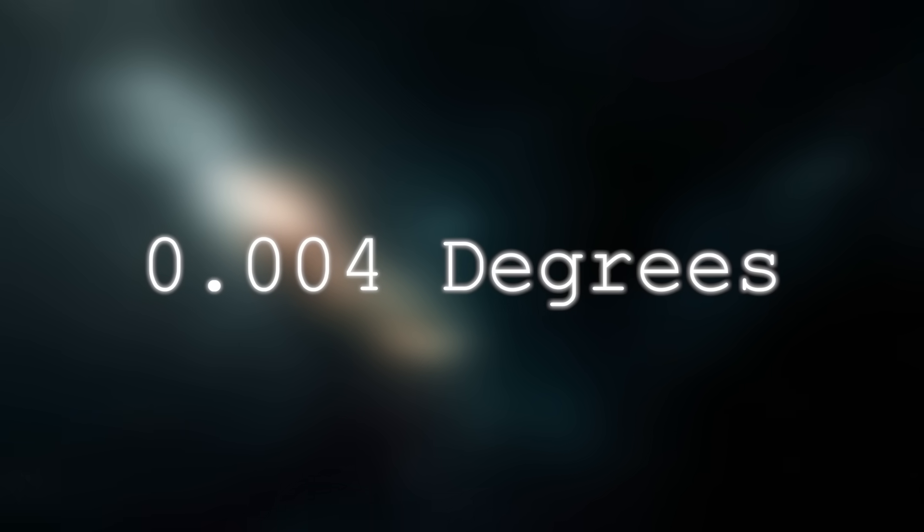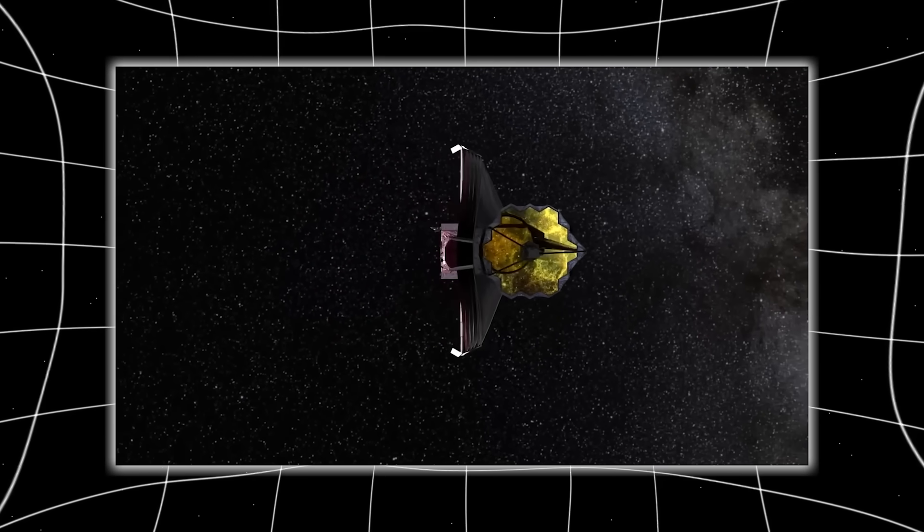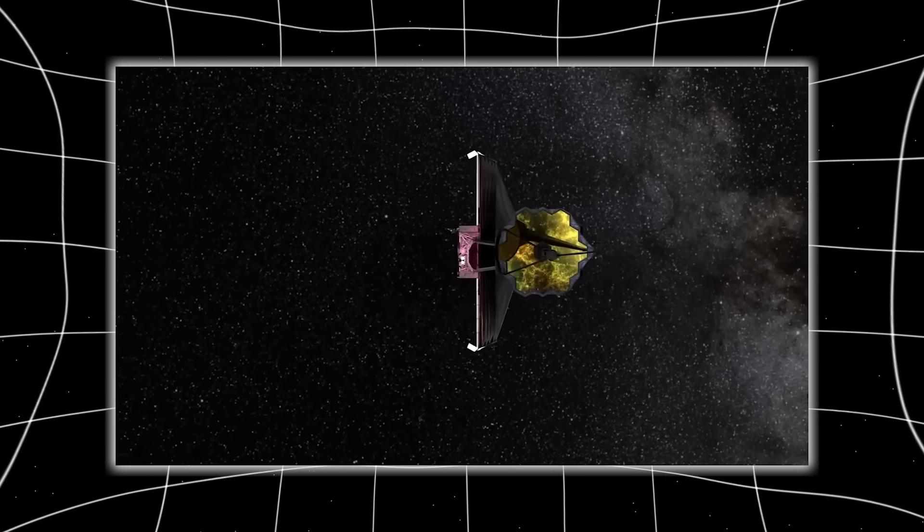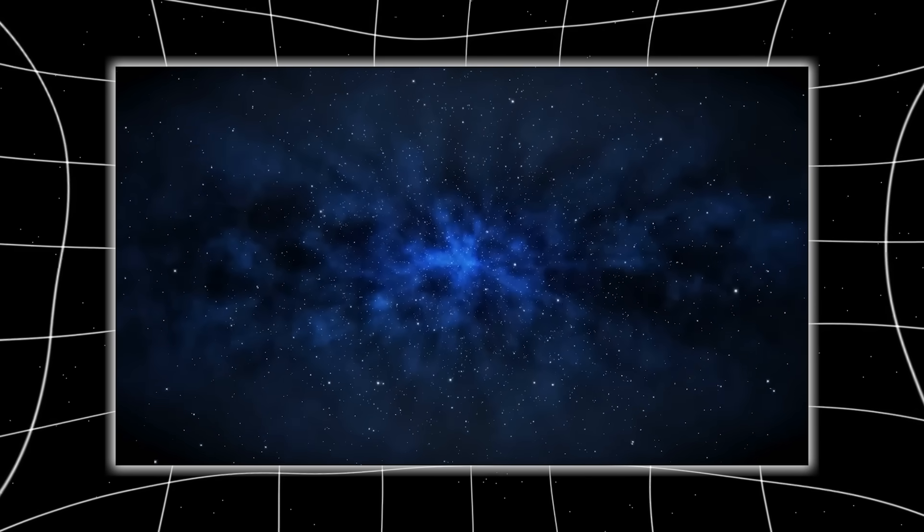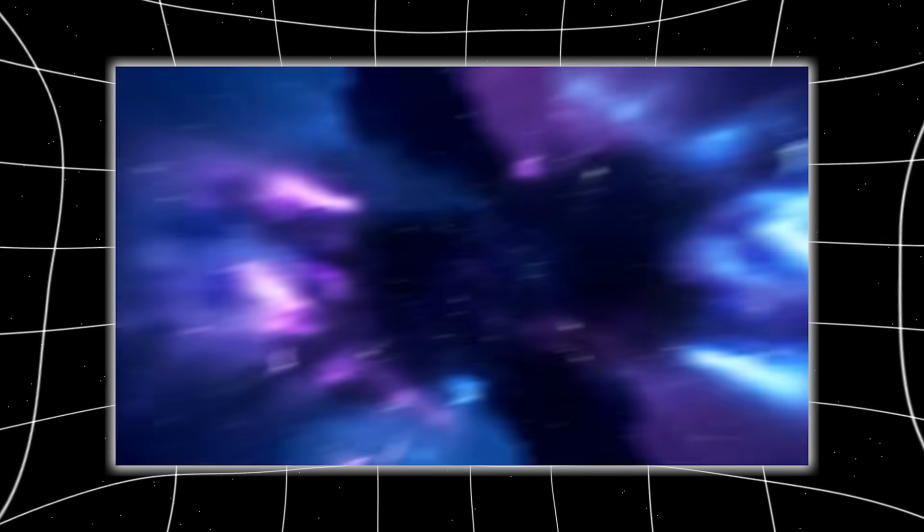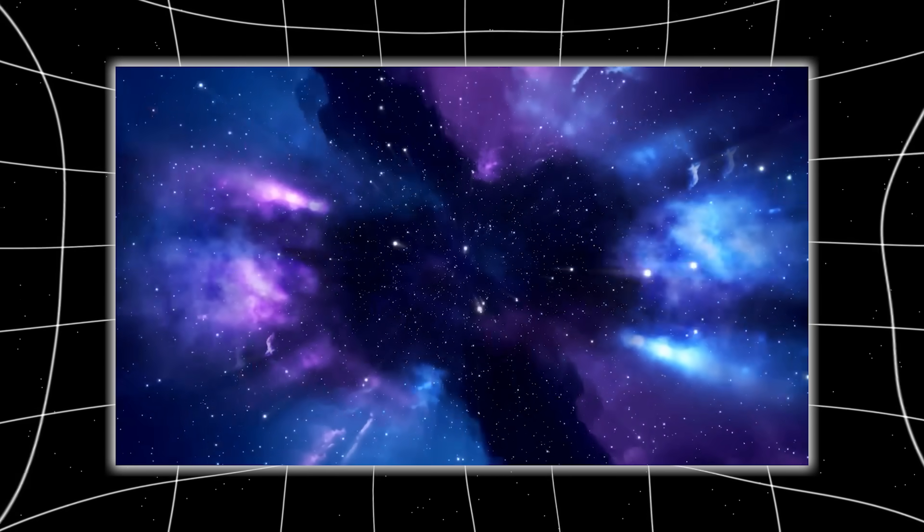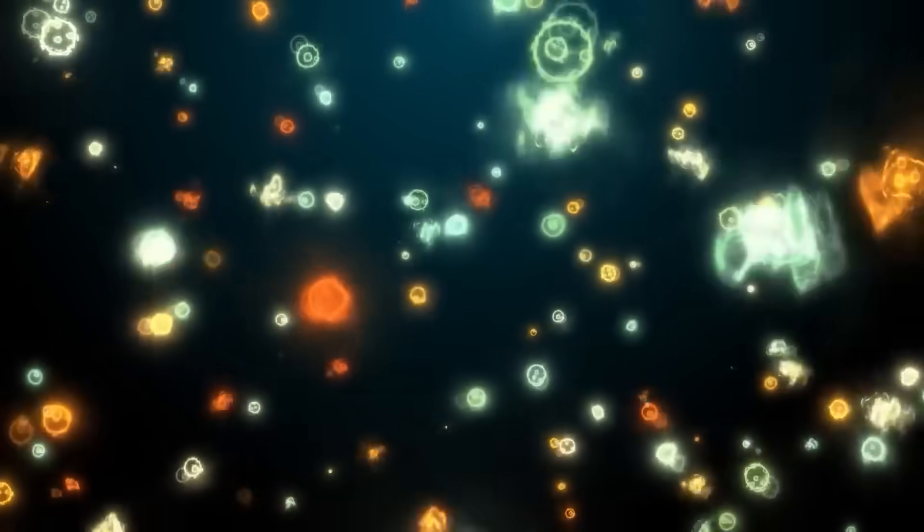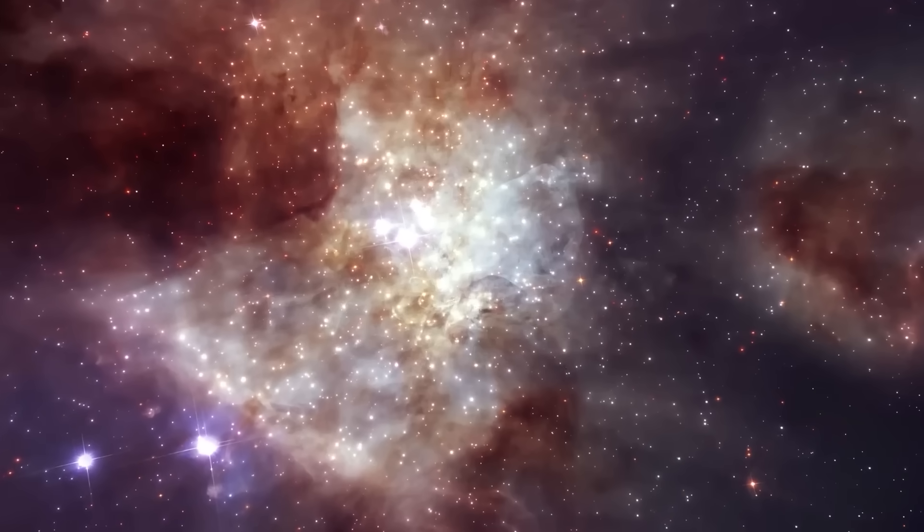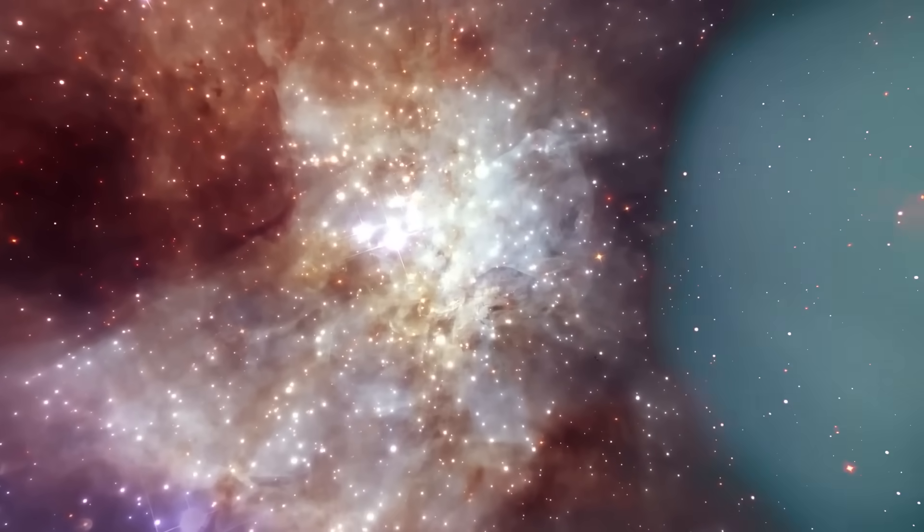It reappeared just 0.004 degrees off from its original position, an imperceptible fraction to the human eye, but catastrophic to the calculations of scientists. Because if something can displace itself without leaving a trail, it means it's not bound by the speed of light. It means it's not bound by time. The only known parallel to this kind of behavior exists in quantum theory, entangled particles reacting instantly across vast distances. But this wasn't subatomic. This was a structure the size of a small moon, behaving as if the laws of classical physics were a mere suggestion.